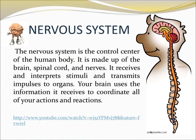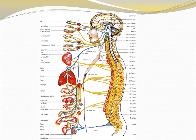Nervous system. The nervous system is the control center of the human body. It is made up of the brain, spinal cord, and nerves. It receives and interprets stimuli and transmits impulses to organs. You can see the picture here, which shows the brain's parts which control all the nerves.